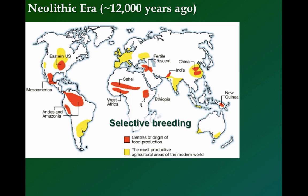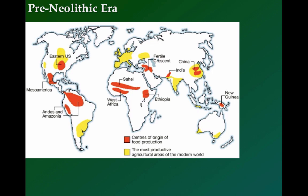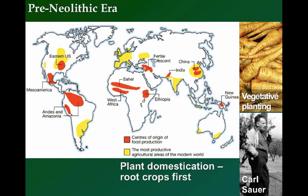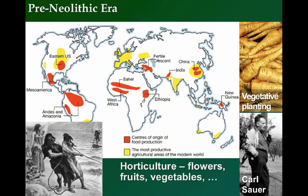According to the renowned American geographer Carl Sauer, even before the Neolithic era started, plant domestication began with vegetative planting of root crops such as beets, radishes, or parsnips. Parts of plants were placed in the ground to grow new plants — this is known as horticulture, the cultivation of flowers, fruits, vegetables, or ornamental plants. Sauer claimed that the invention of agriculture probably first occurred around tropical seashores, where settled fishermen could produce enough surplus food to invest time in experimenting and nurturing plants and animals.